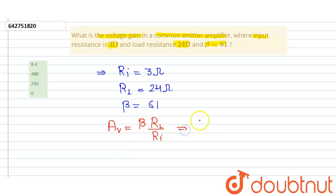So beta is 61, RL is 24, divided by RI which is 3Ω. This cancels out to 8 times. So we are getting a voltage gain Av equivalent to 488.